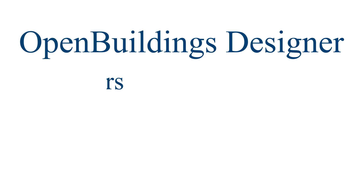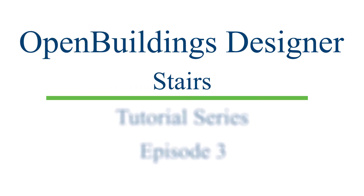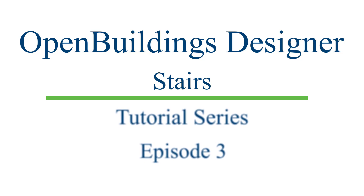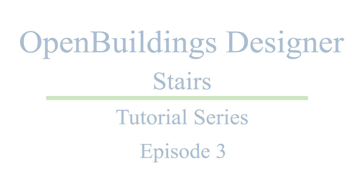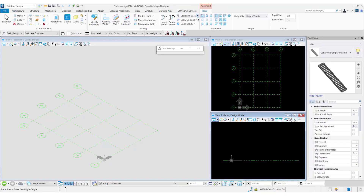Hello and welcome to the series of videos where we'll be showing you the various features of our stair tool in Open Building Designer Connect Edition. In this video we will see the various placement points for placement of stairs. For this, let us go to the building design workflow and from the architectural tab we select the stair tool.